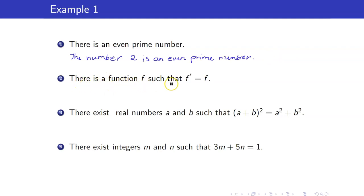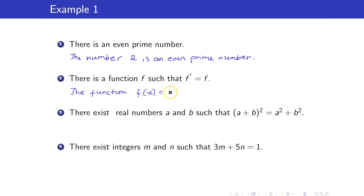Next, there is a function f such that f prime — its derivative — is equal to itself. What will that function be? The first function that comes to mind would be the function e to the x. So we say the function f of x equals e to the x satisfies f prime of x is equal to f of x.